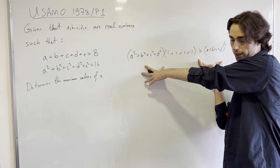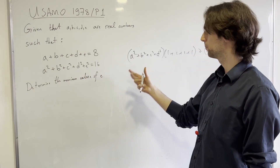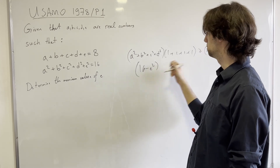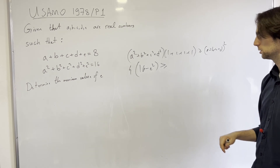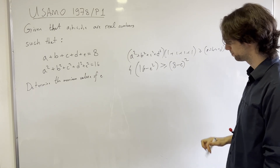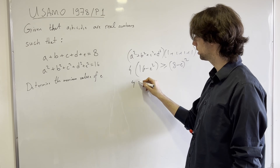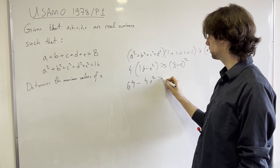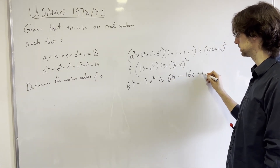This needs to hold true. Now what is this in terms of e? Well, this is going to be 16 minus e squared, times 4, needs to be greater than or equal to (a plus b plus c plus d) squared, which is (8 minus e) squared. And now what is this equivalent to? We're going to have 4 times 16, which is 64, minus 4e squared, greater than or equal to 64 minus 16e plus e squared.